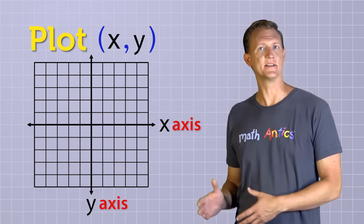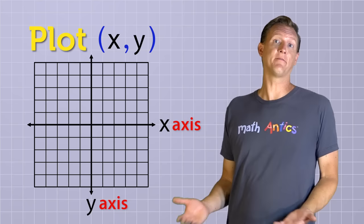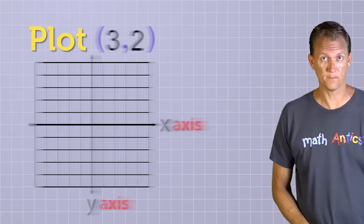But now, how do we actually plot these coordinates on the coordinate plane? Well, the first number in the ordered pair tells you where along the x-axis the point is located, and the second number in the ordered pair tells you where along the y-axis the point is located. The two numbers in an ordered pair work together to define a single point, and each one of the numbers only gives you half of the information about where that point is.